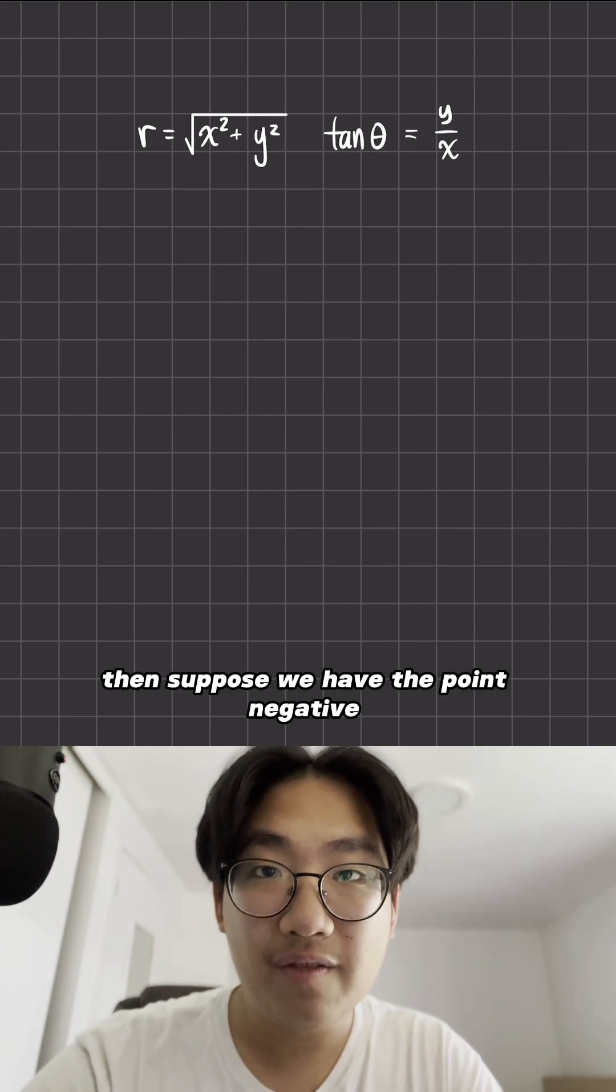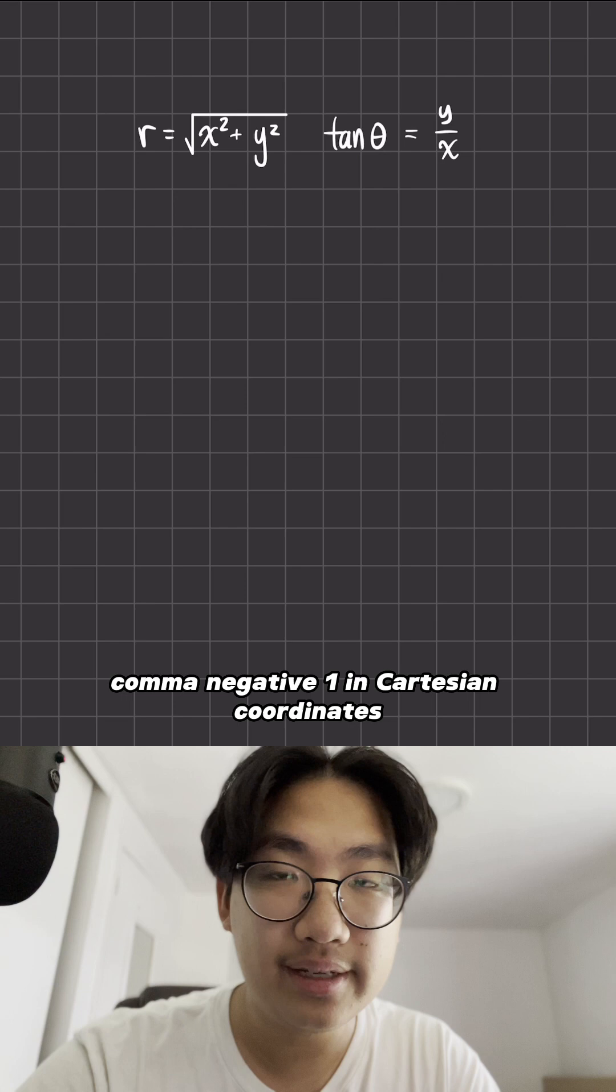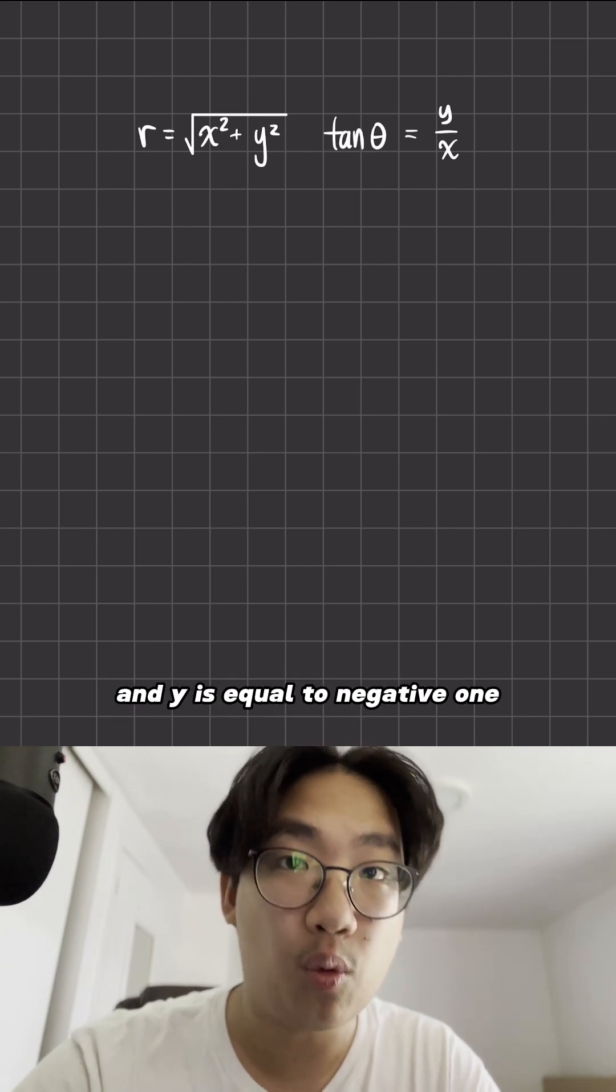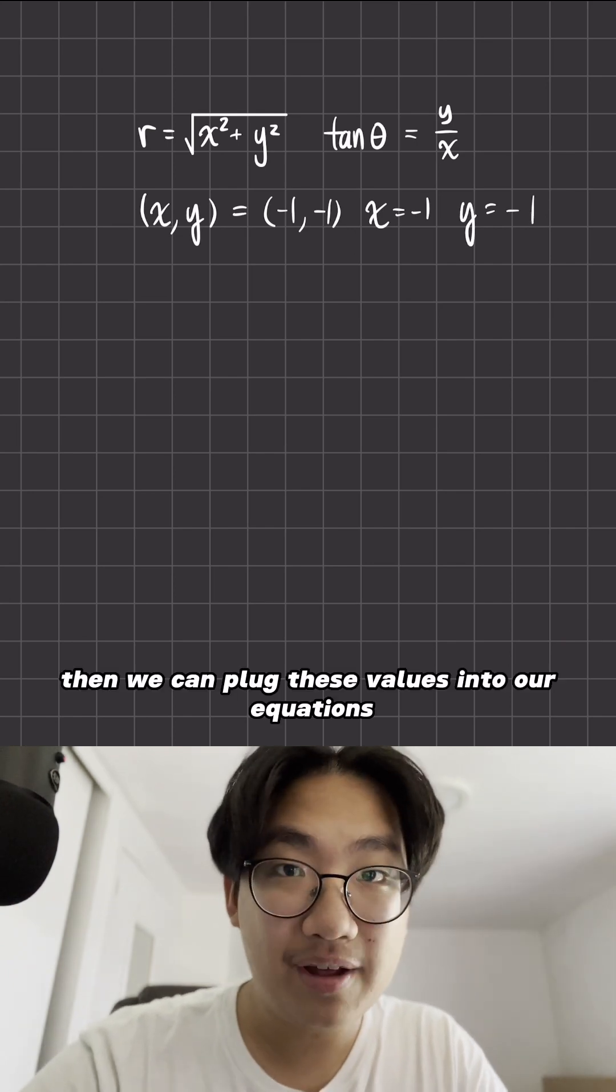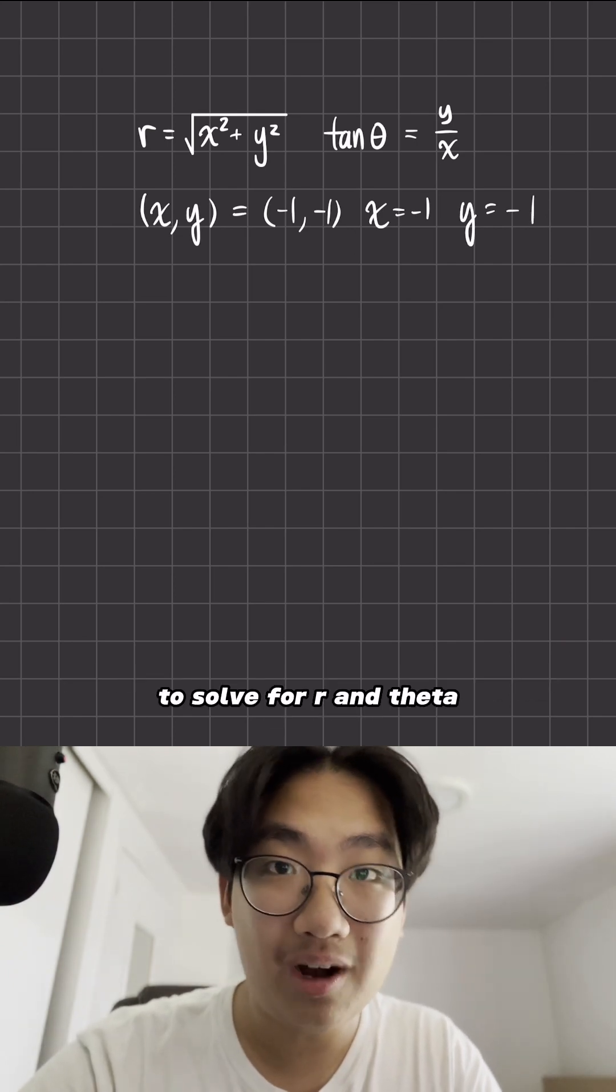Suppose we have the point in Cartesian coordinates, meaning x equals negative one and y equals negative one. We can plug these values into our equations to solve for r and theta.